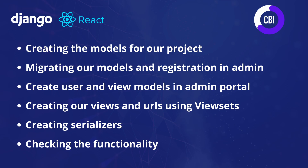We're going to start by creating the models in models.py, then migrate those models so the database has that structure, and register our models in admin.py. After that we'll create a user, start our server, and check out the models in the admin portal. Then we'll create our views and URLs using Django ViewSets, create serializers, and finally start the server again to check out the full functionality.